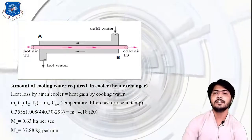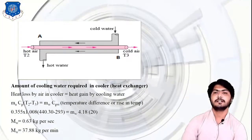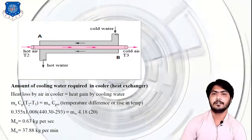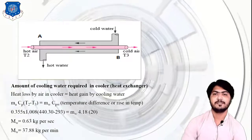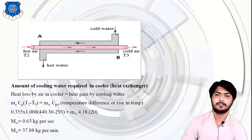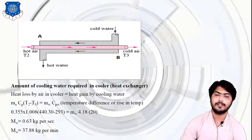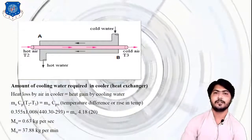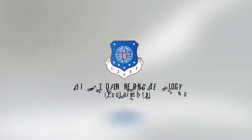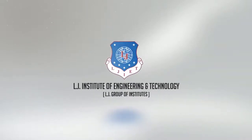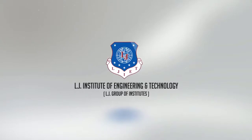This completes the second numerical problem, which differs from the first by including the mass flow rate of cooling water in the heat exchanger. Thank you so much.